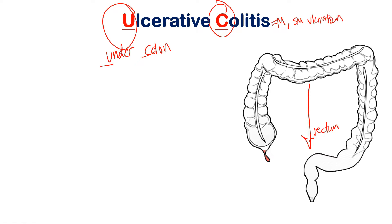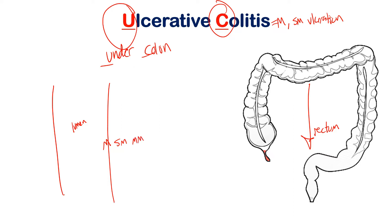So here's a part of the bowel. When you're looking at the wall of the bowel — this is the lumen right here — you have four main layers going from inside to outside: you have the mucosa, the submucosa, the muscularis mucosae, and the serosa. The muscularis is the muscular layer. The damage in ulcerative colitis is happening in the mucosa and submucosa layers specifically — that's the ulceration.